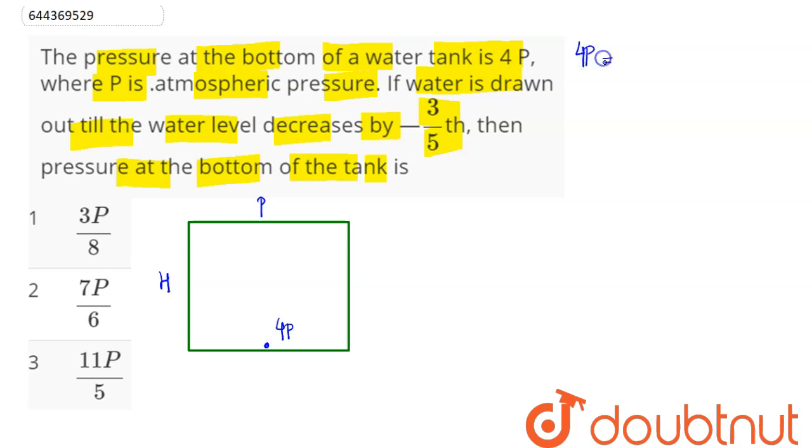Pressure equals P plus rho into g into H. So value of rho g H comes out to be 3P, where rho is the density of the liquid in this water tank, g is the acceleration due to gravity, and H is the height of the water tank.